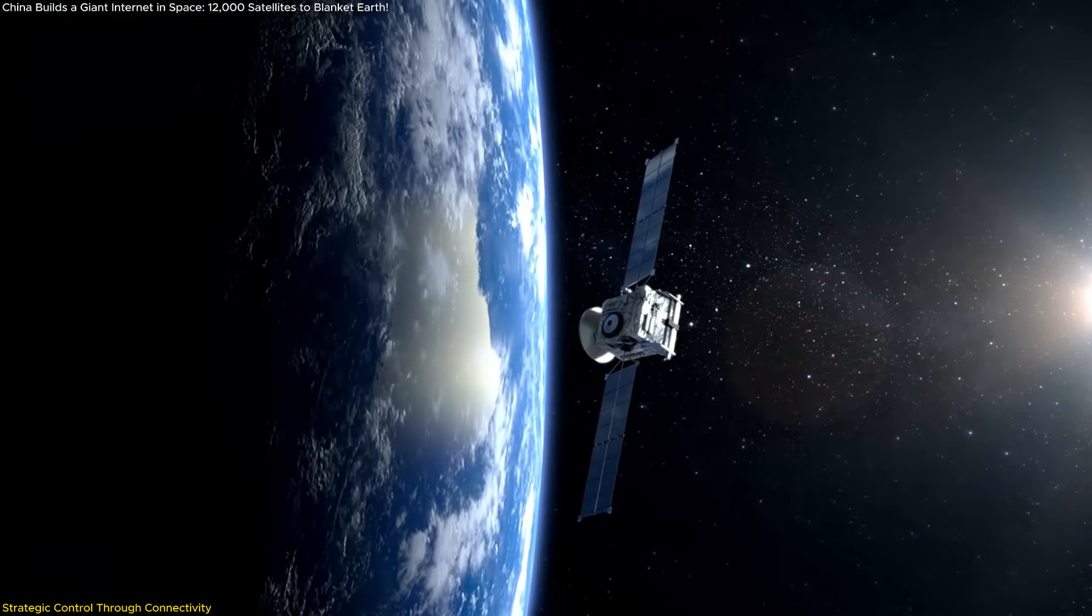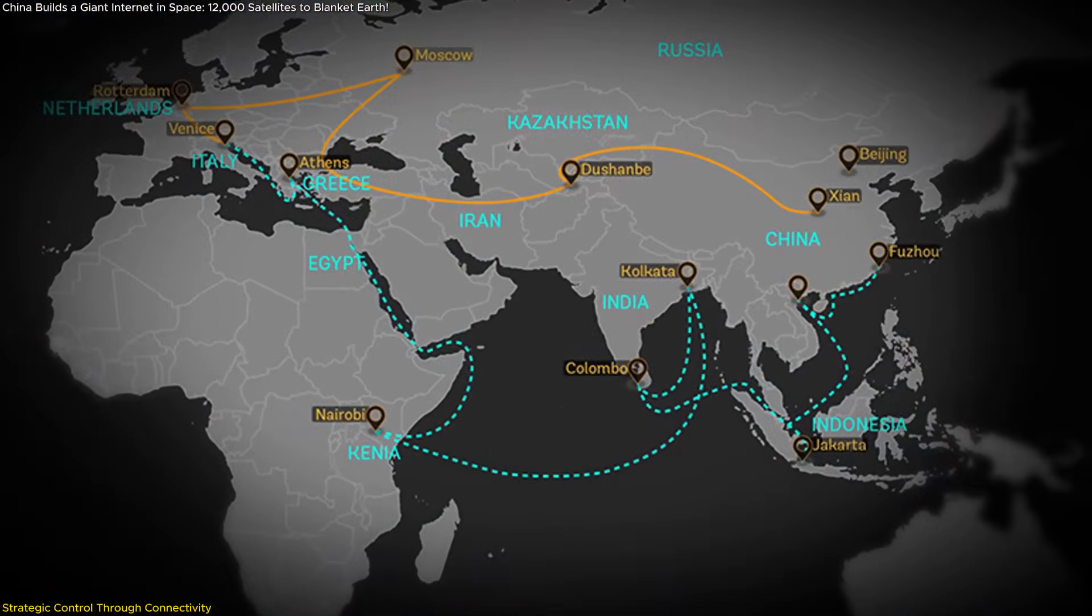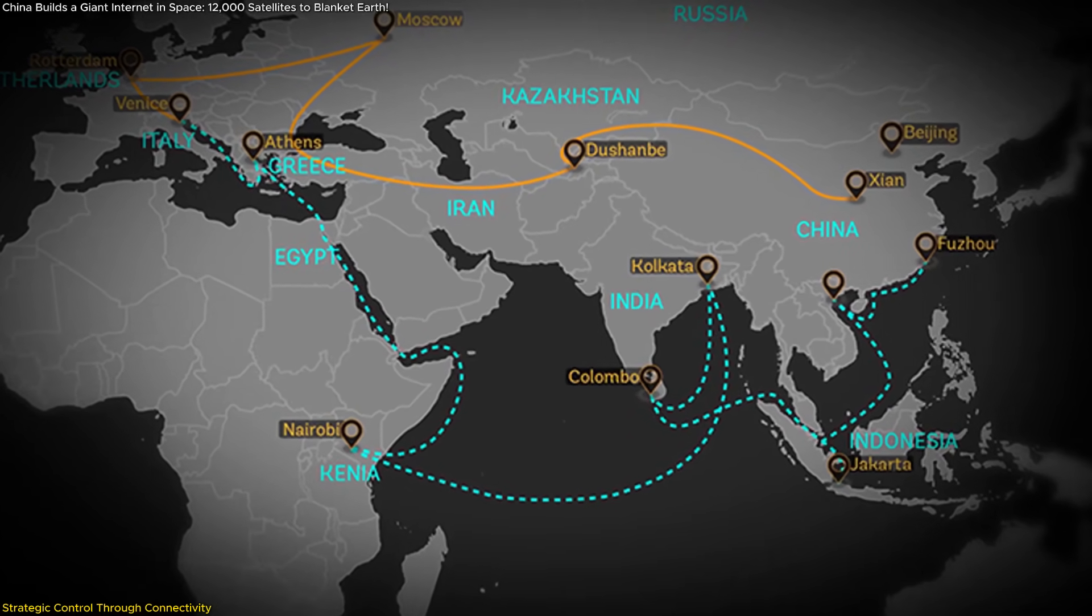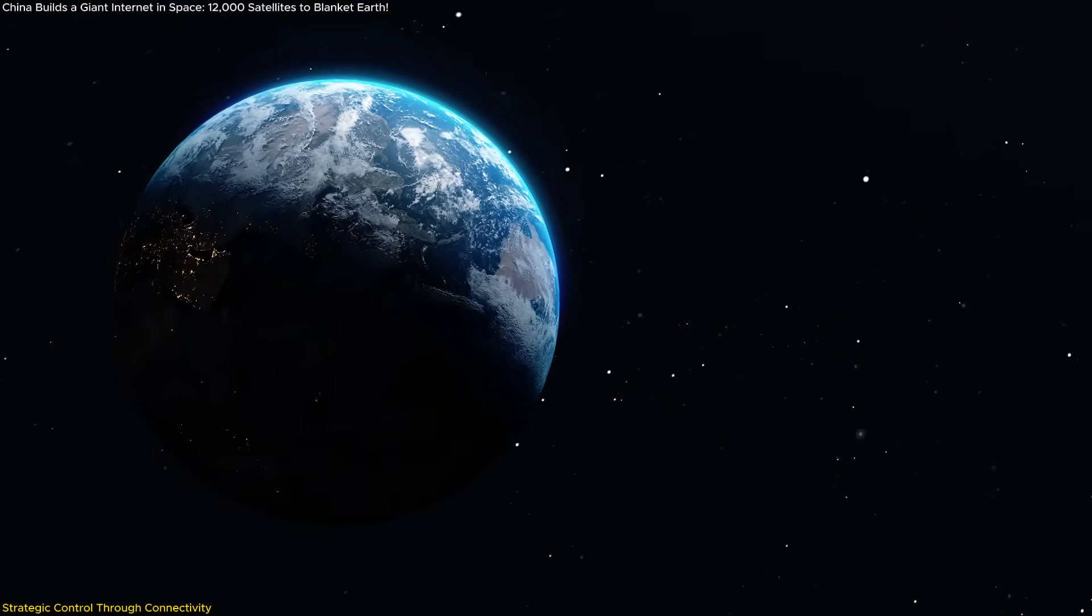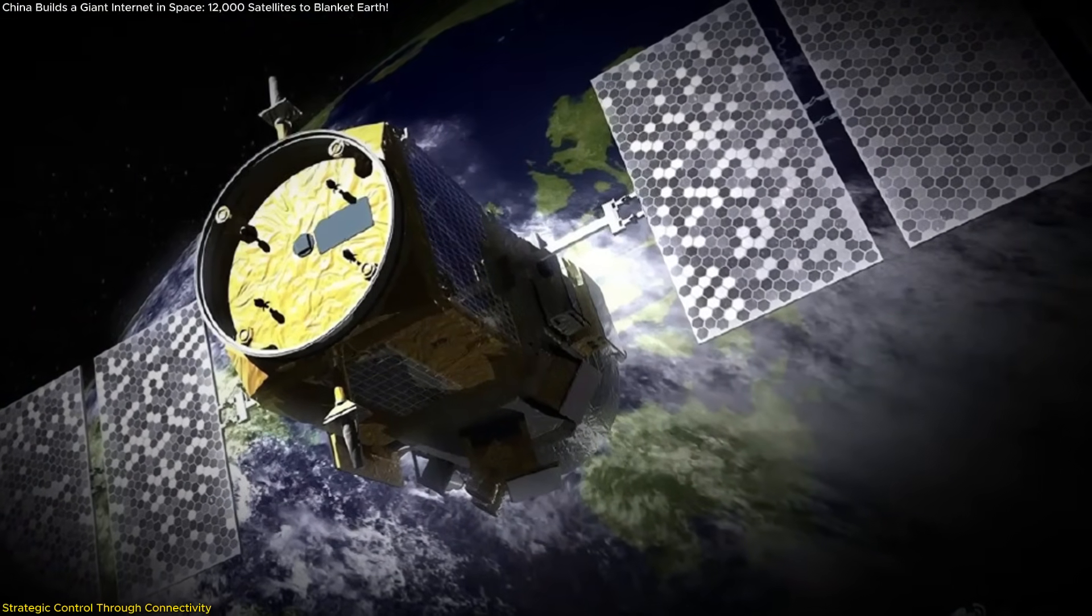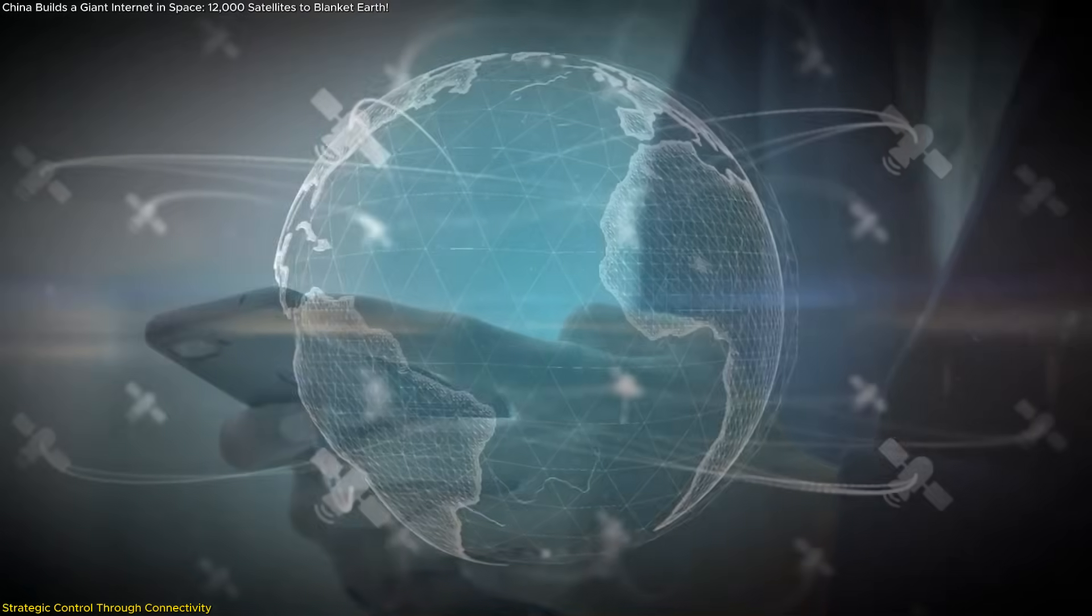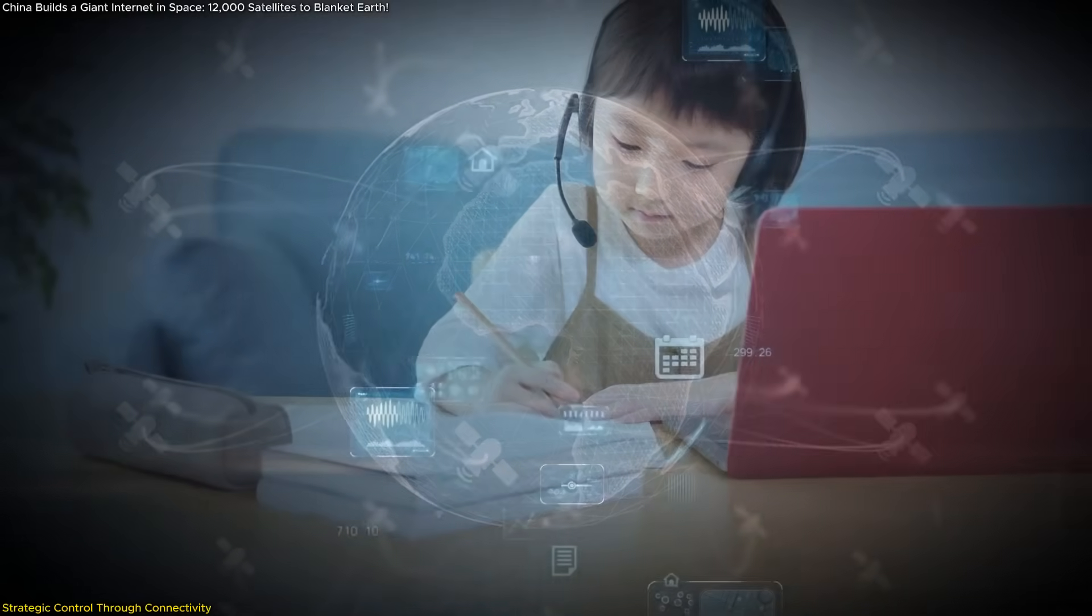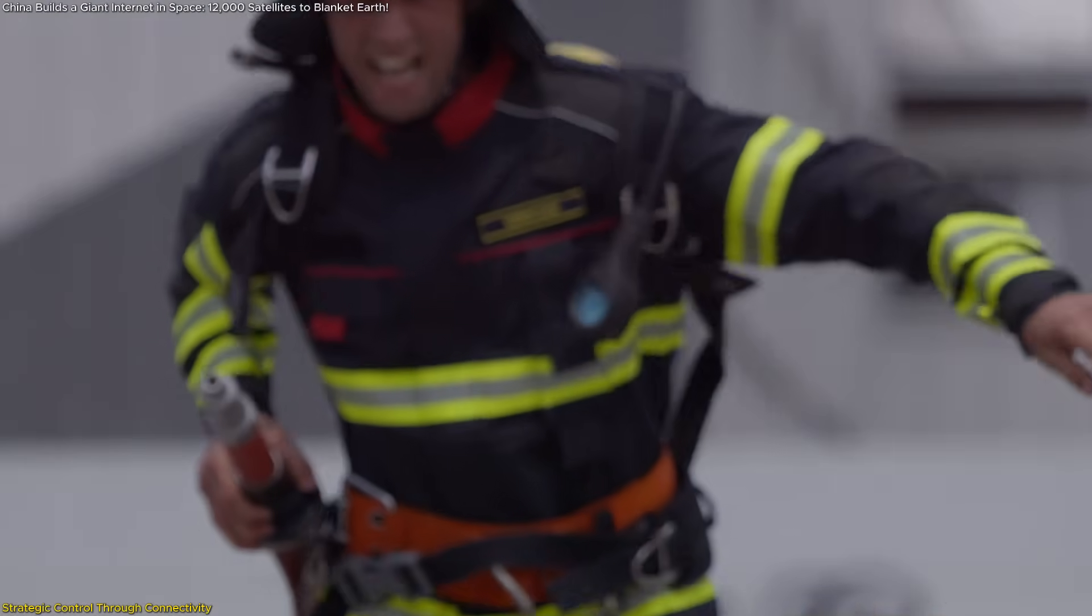But there's another layer to this. Guang could eventually become a digital export. By offering connectivity services to nations participating in China's Belt and Road Initiative or to regions currently underserved by internet providers, Guang positions itself as a bridge to the future. For countries with limited digital access, a reliable satellite broadband service could be transformative, improving education, health care, commerce, and emergency response.